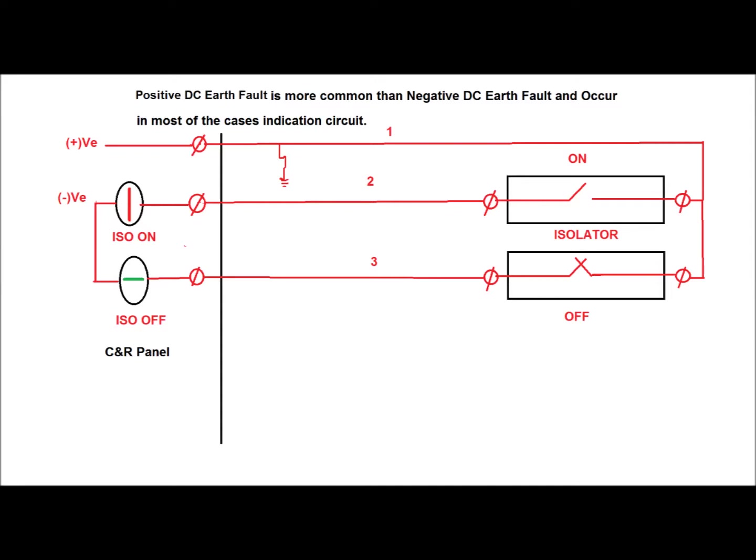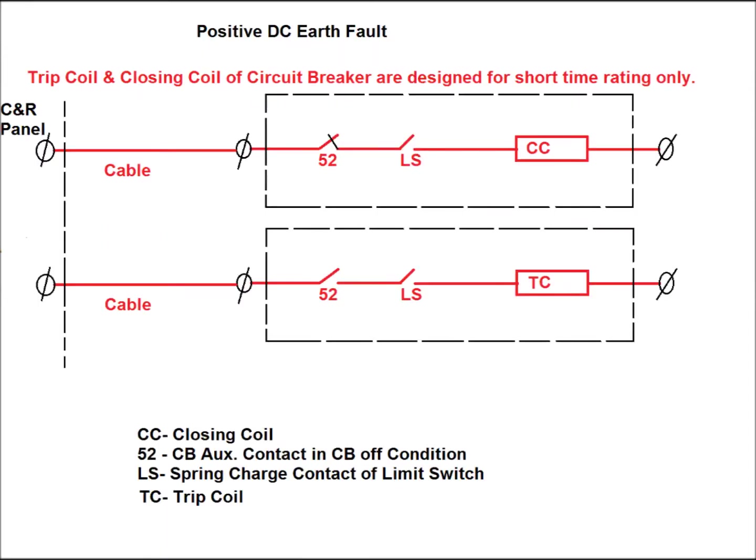Now a positive earth fault occurs as shown in the diagram. Cable 1 is the positive cable taken to the isolated end of any isolator. The return cable is cable 2 — for isolated ON indication — and cable 3 is for isolated OFF indication. The trip coil and closing coil of a circuit breaker are also shown, where CC is the closing coil, and 52 is the CB auxiliary contact. In CB closed condition there is a CB NC auxiliary contact in series with the closing coil circuit, and a NO contact in series with the trip coil. LS is the limit switch contact for spring charge — if the spring is charged, this contact will be in make or NC position.